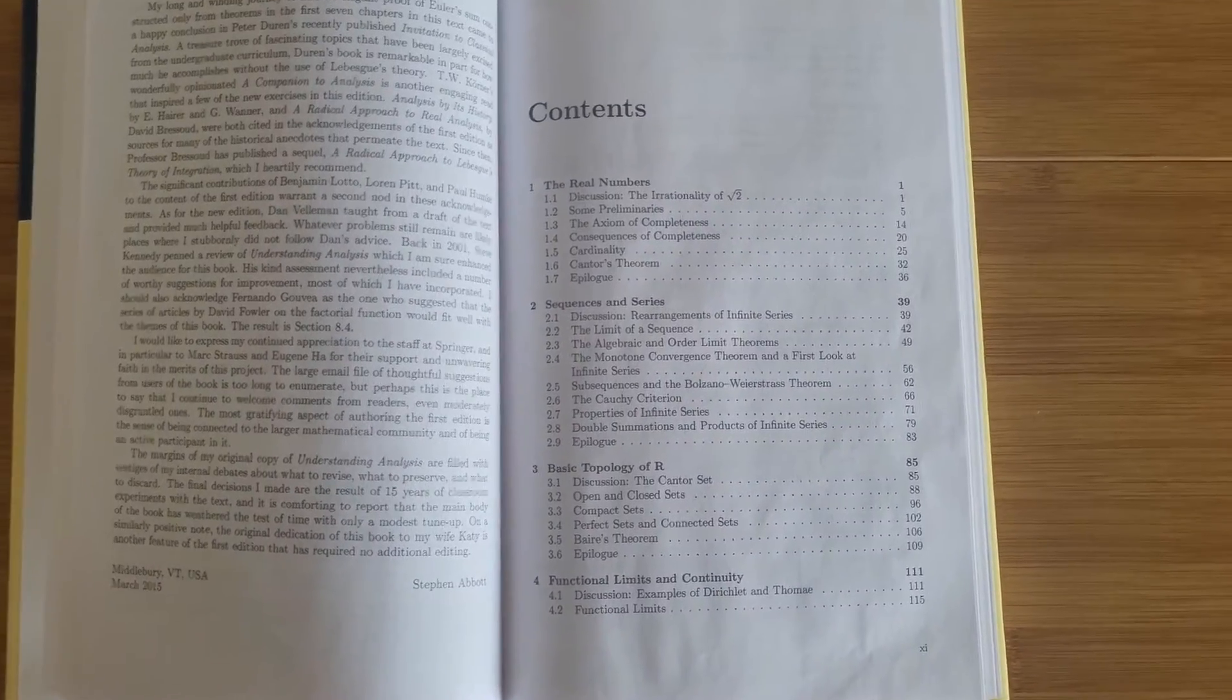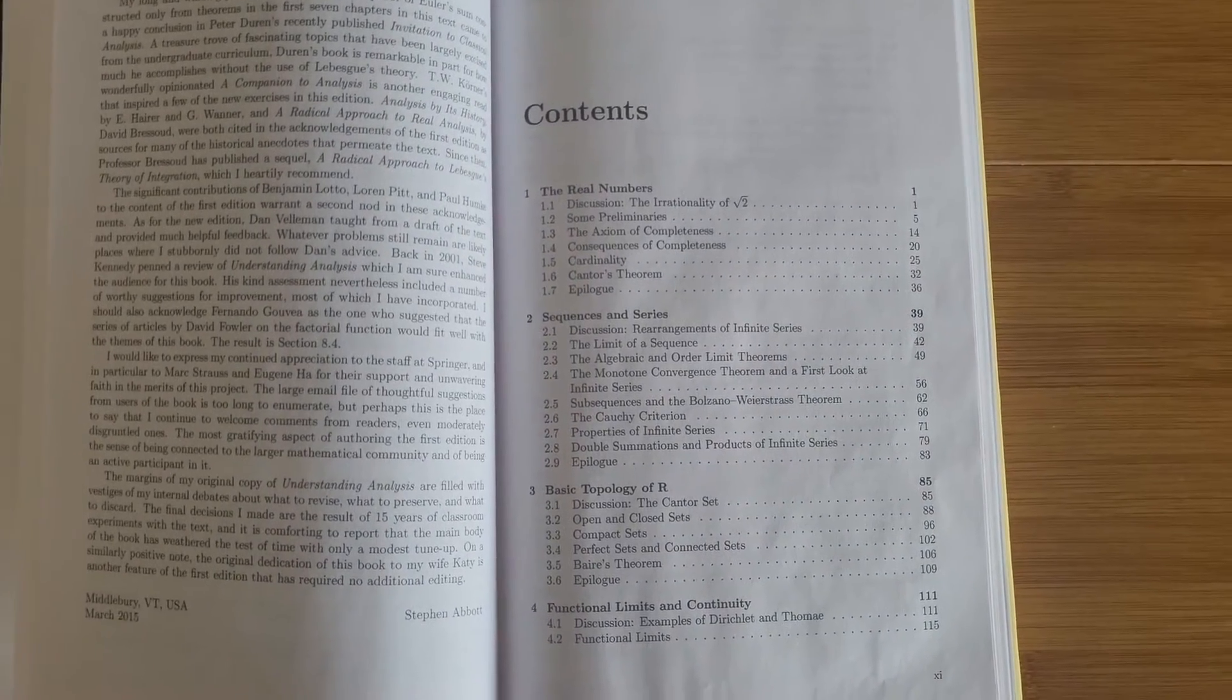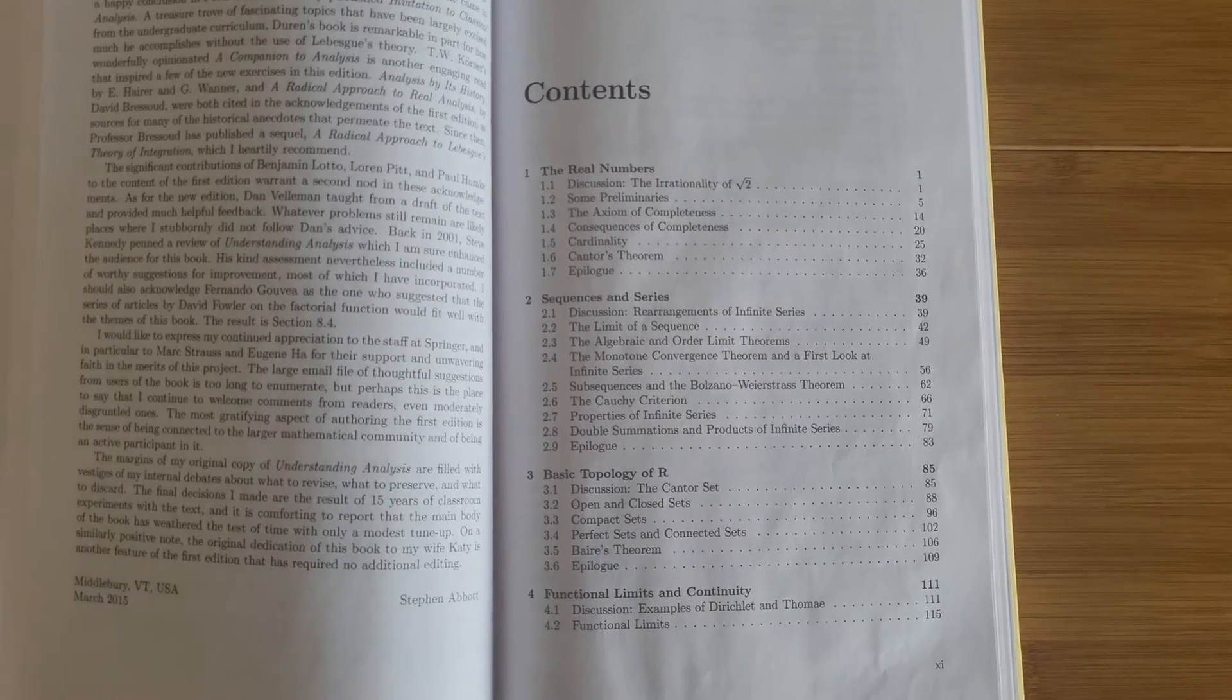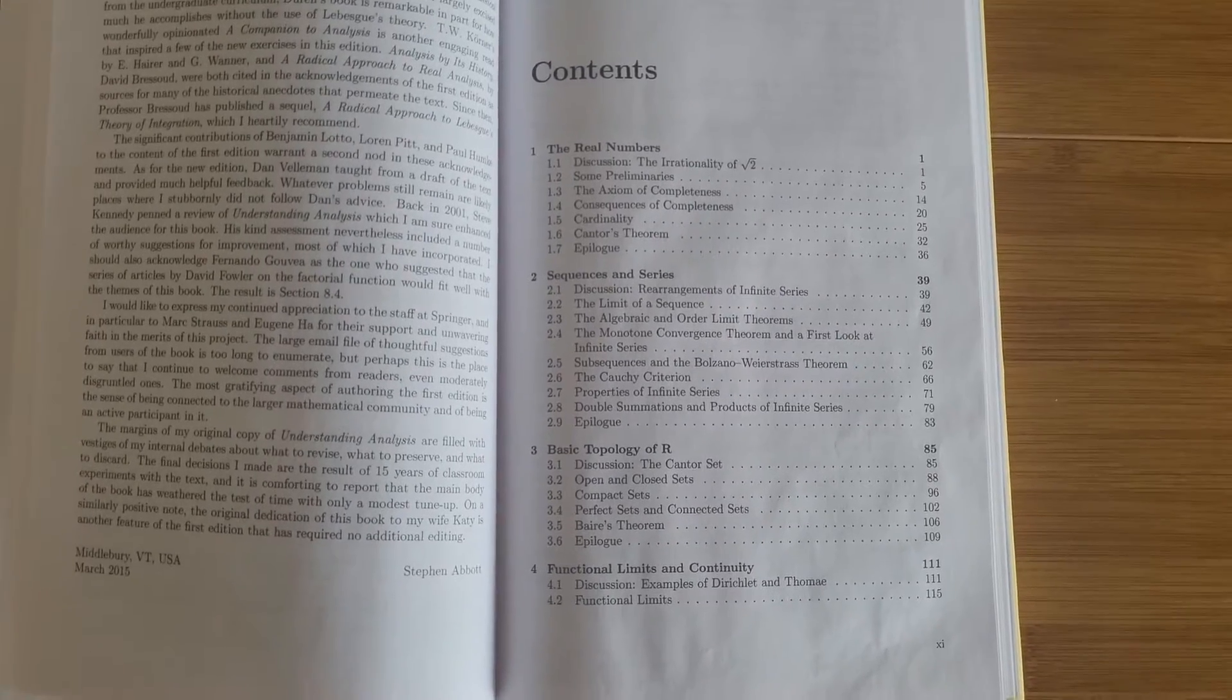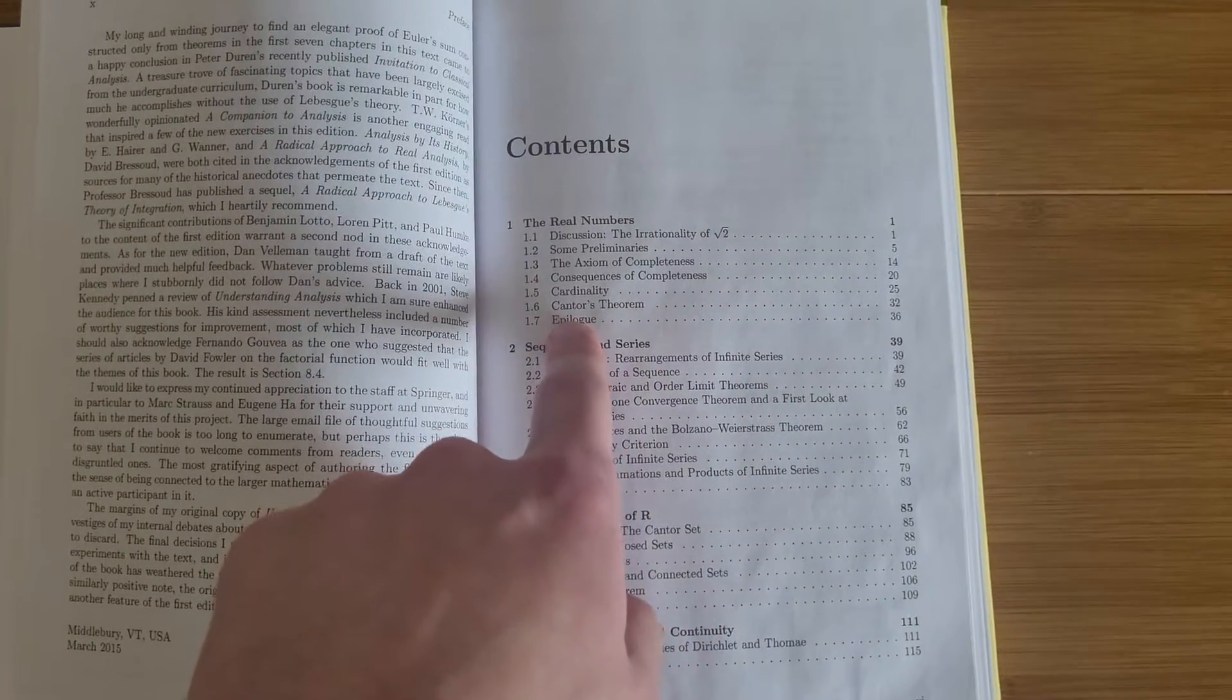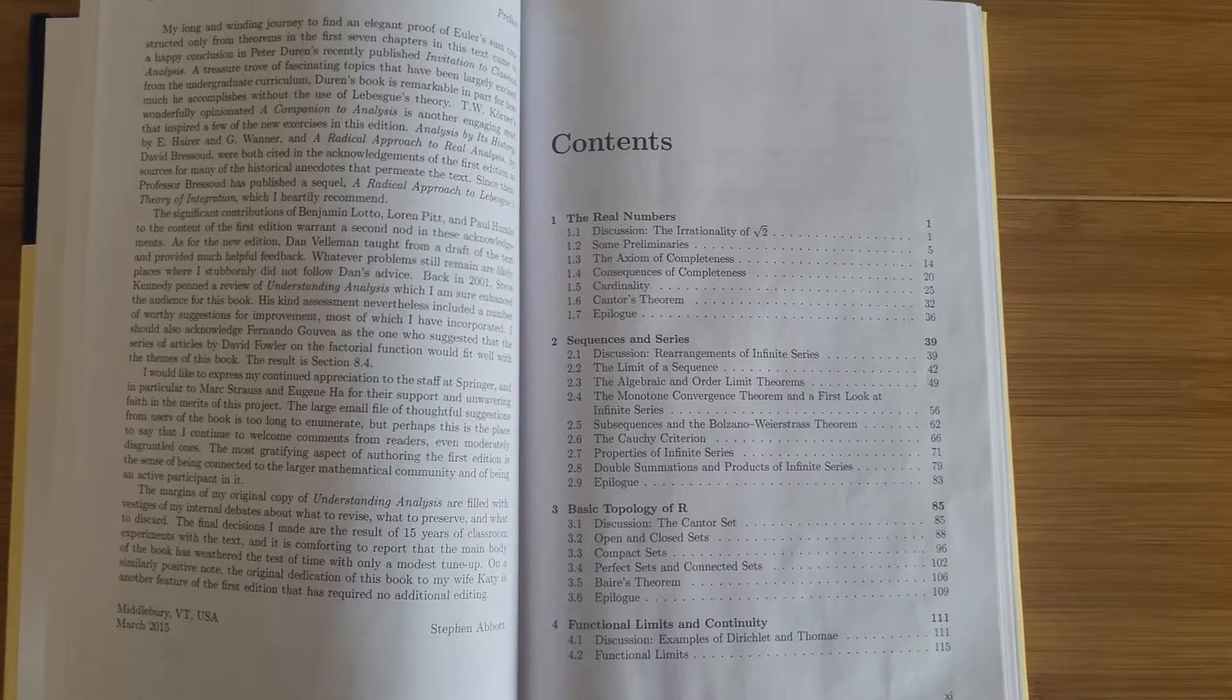Looking at the table of contents, we start with the first chapter on the real numbers. This is a preliminary chapter covering proof techniques, operations with sets, supremum and infimum of bounded sets, cardinality, and Cantor's theorem on Cantor's diagonal argument to prove that sets are uncountable.